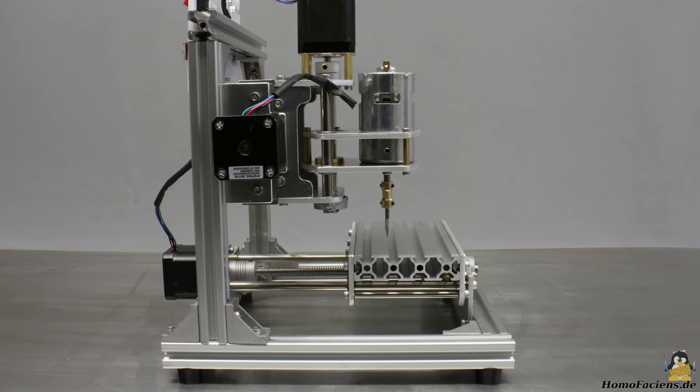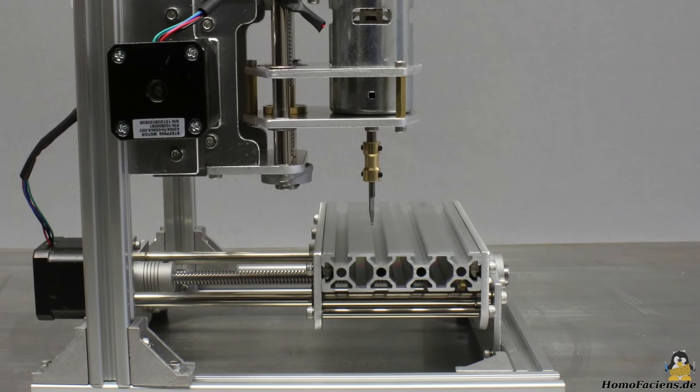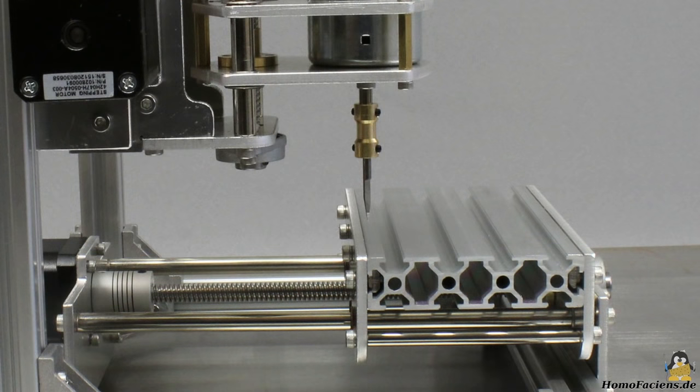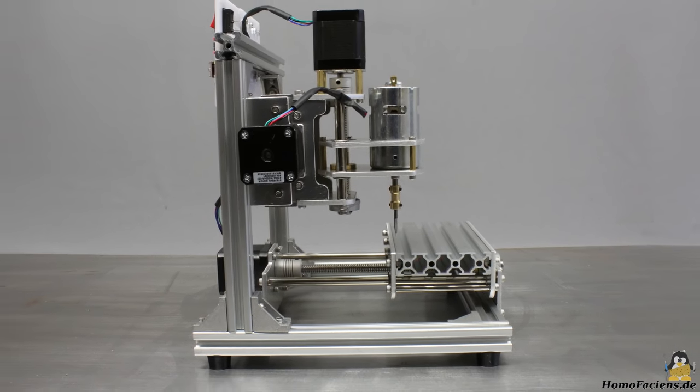When using the product photos as template, the CNC table of the assembled frame isn't really underneath the milling motor. But only a few screws have to be loosened to get a better result.